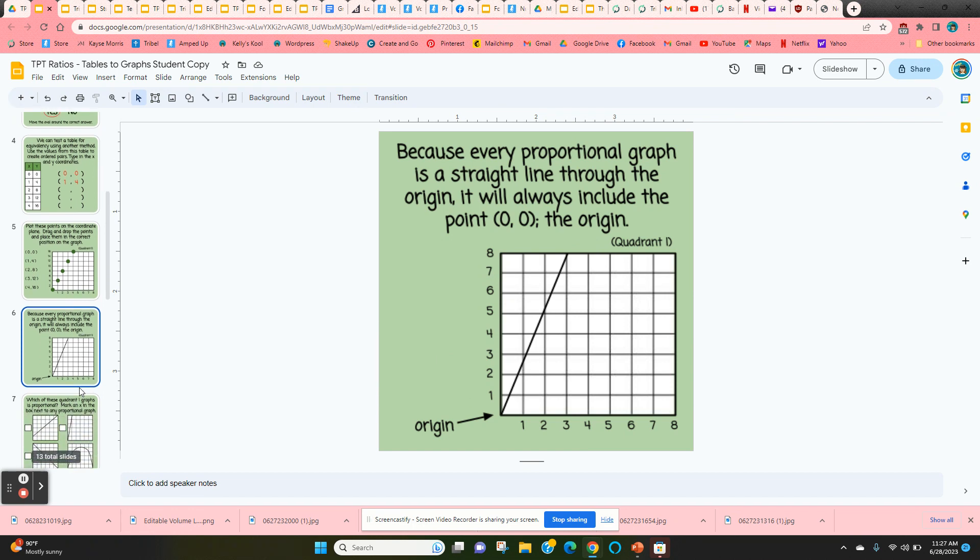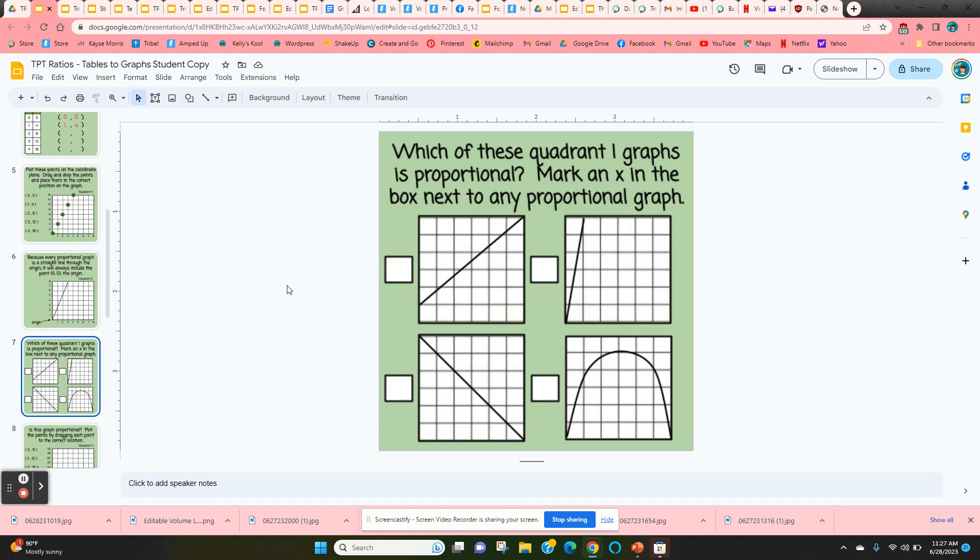On slide 7, students are going to be looking at these four graphs and determine if any of them are proportional. So the only one that would be proportional would be this one. They can just put an X there. First one doesn't go through the origin, second one doesn't go through the origin, and the last one's not a straight line.